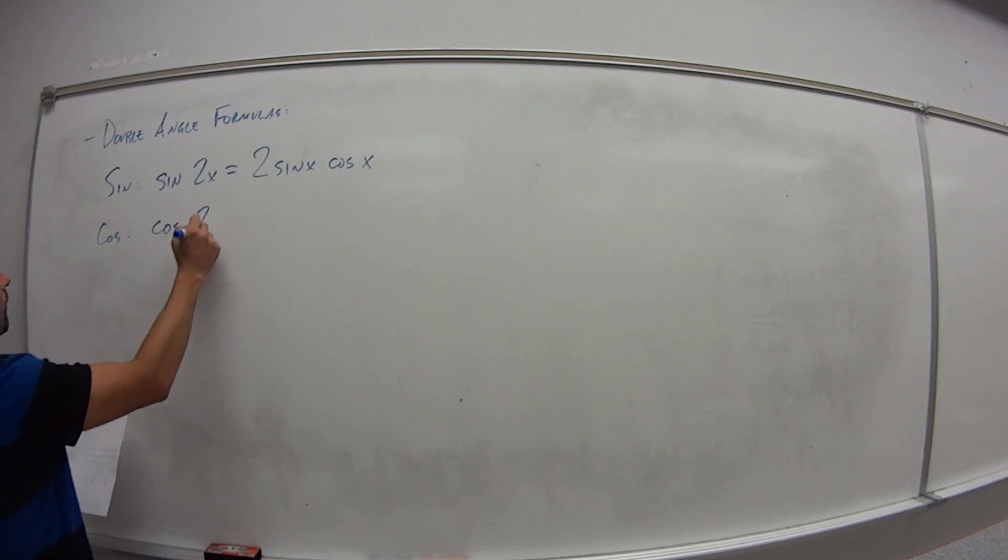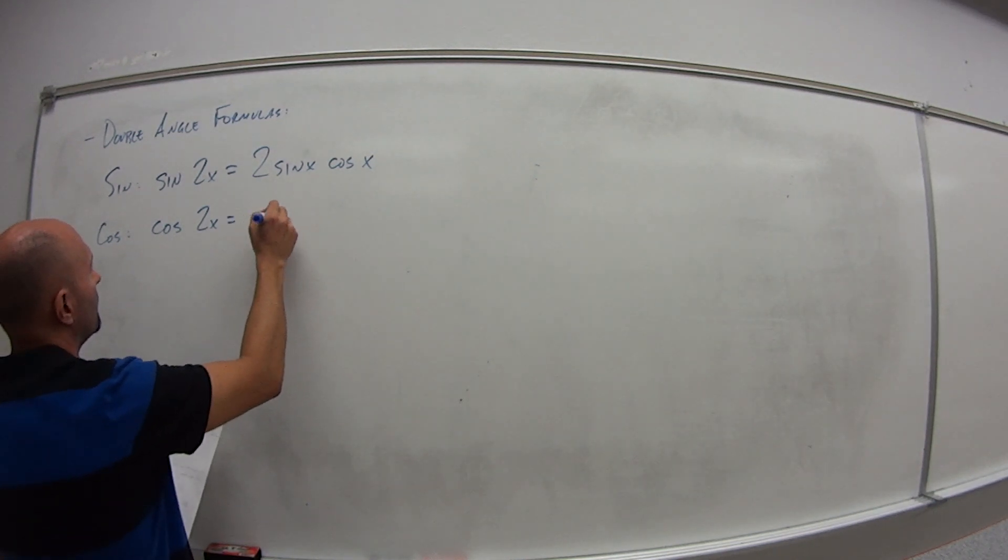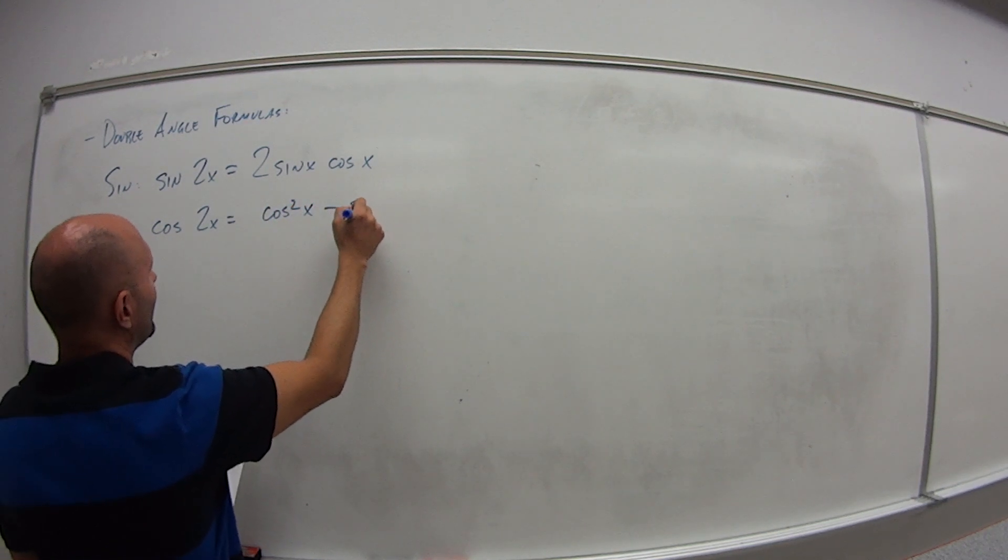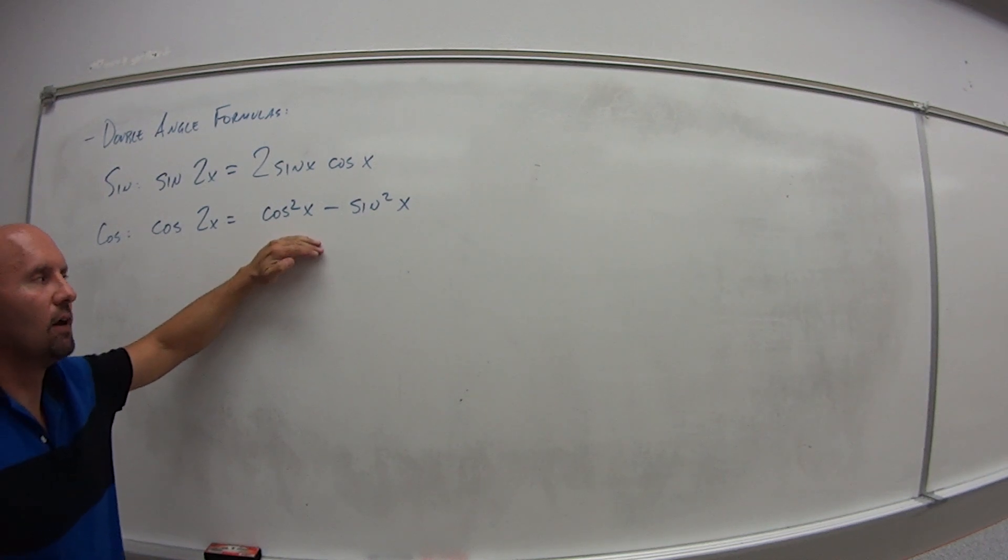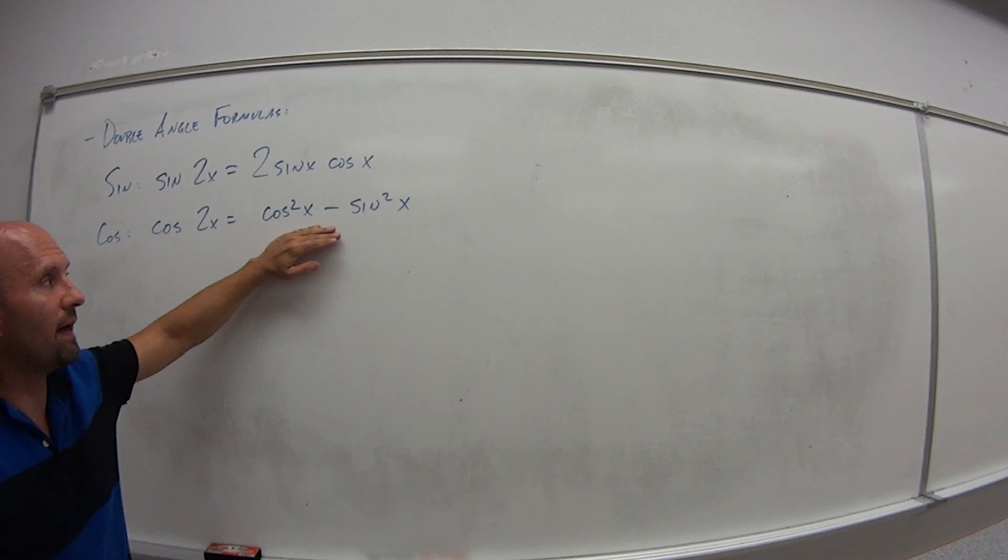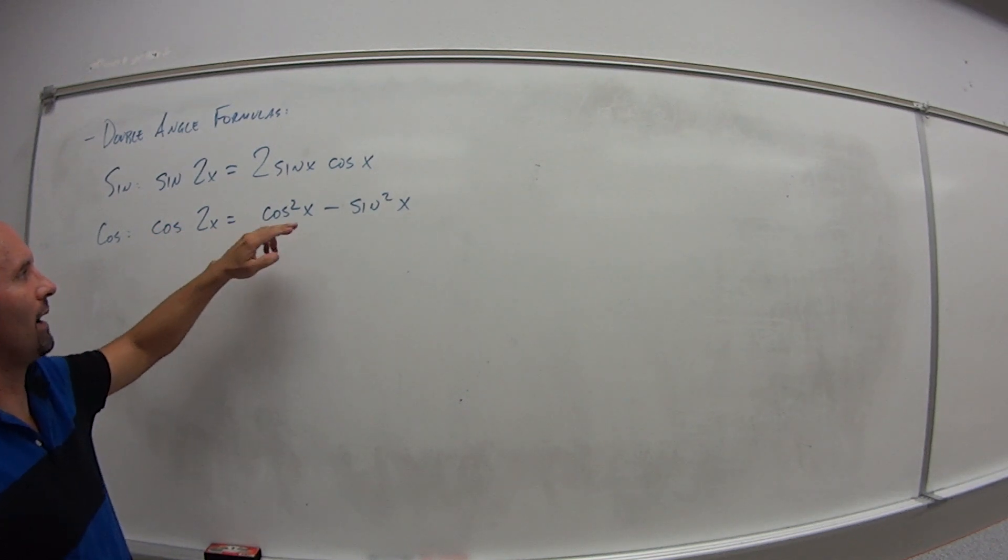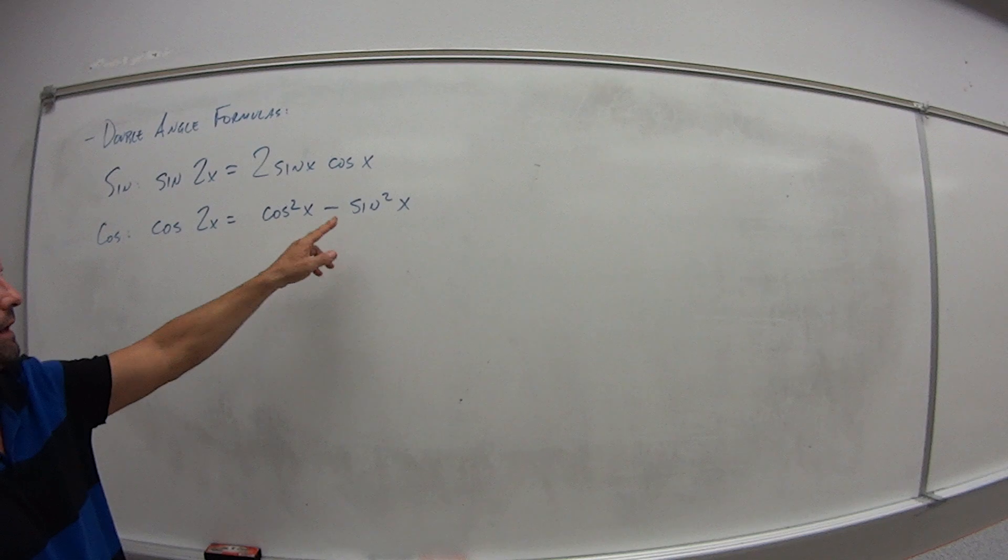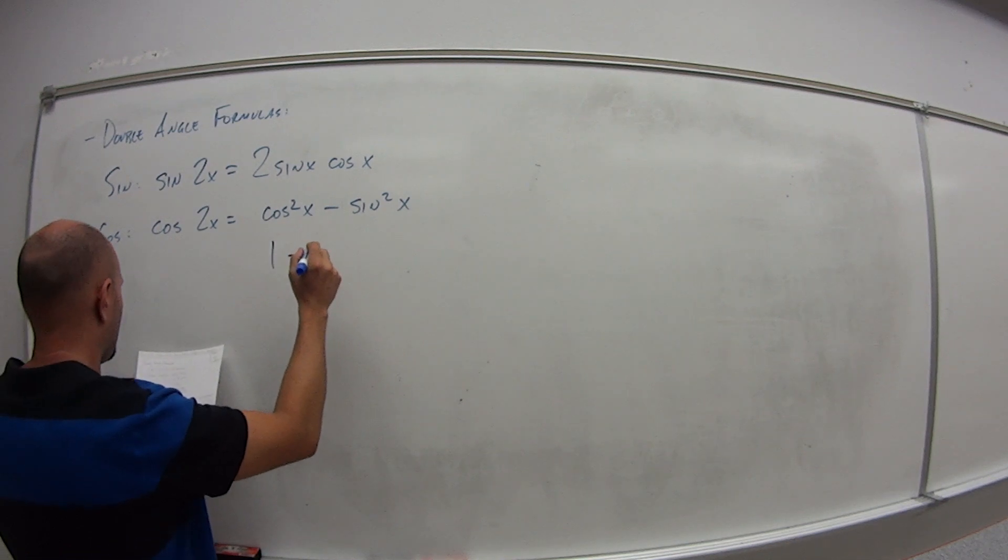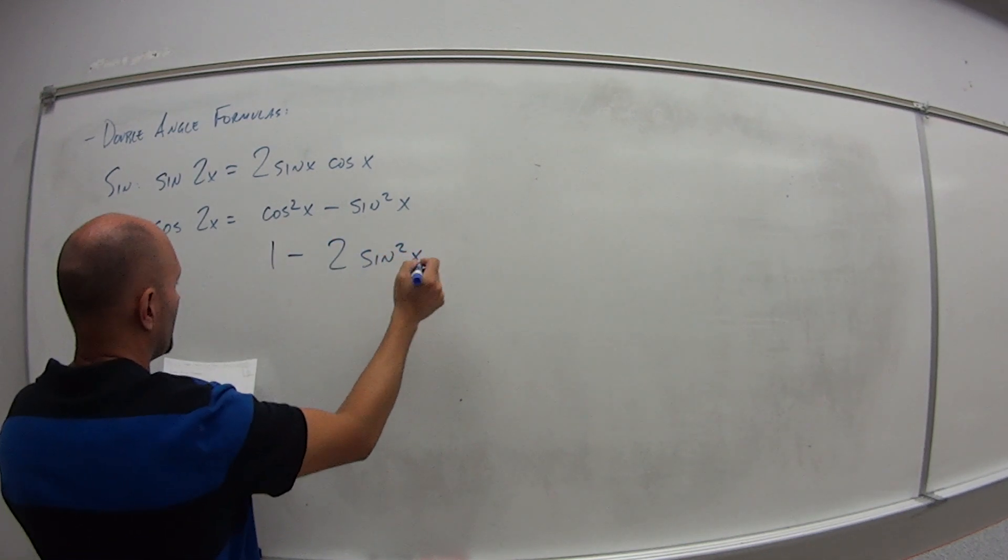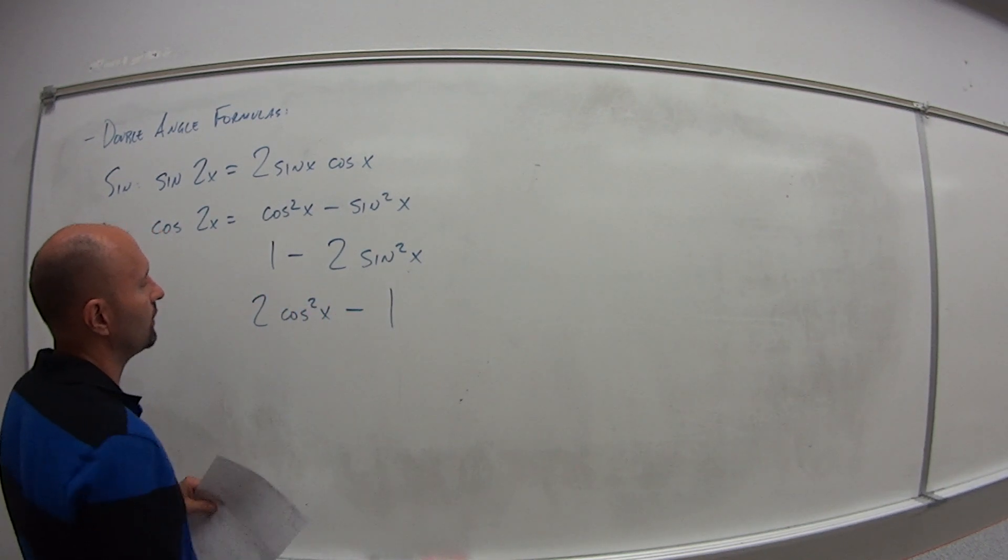Cosine of 2x, we actually have three different possibilities. The first one is cosine squared x minus sine squared x. Now please, do not get this confused with our Holy Grail Pythagorean identity. That was cosine squared plus sine squared. So the double angle formula for cosine is these guys minus, and it doesn't equal anything. It's just cosine squared minus sine squared.